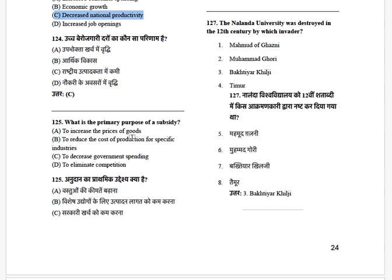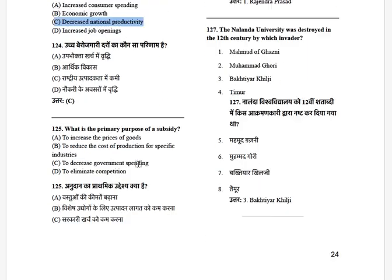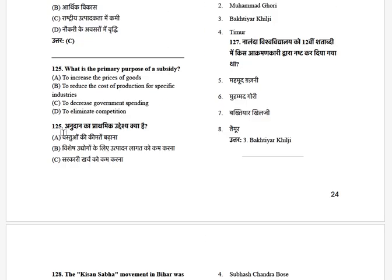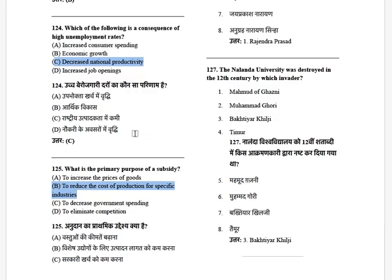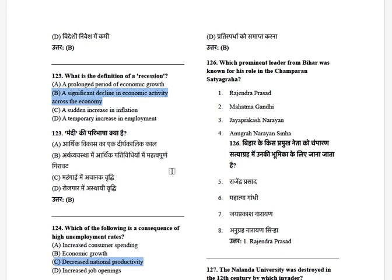What is the primary purpose of a subsidy? The options are: to increase the prices of goods, to reduce the cost of production for a specific industry, to decrease government spending, and to eliminate competition. The answer is B — to reduce the cost of production for a specific industry.